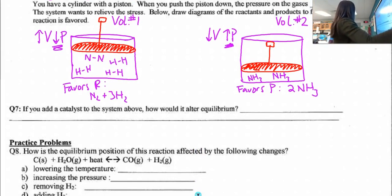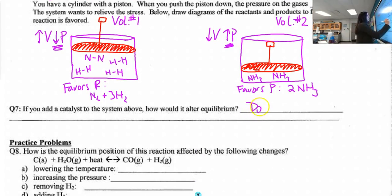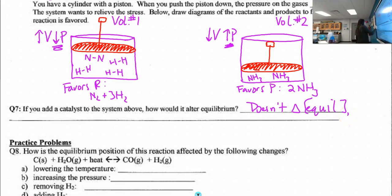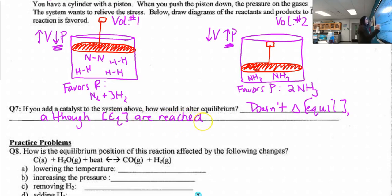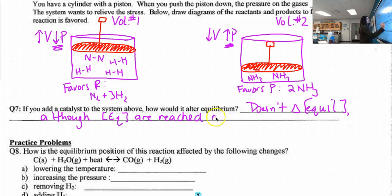What do we say happens if you add a catalyst? It doesn't change equilibrium — you just get there faster. It doesn't change equilibrium concentrations, although equilibrium concentrations are reached more quickly.